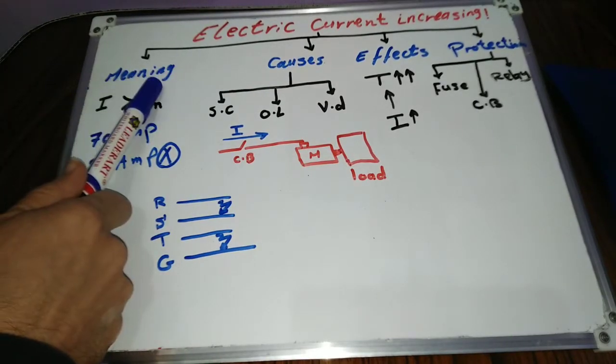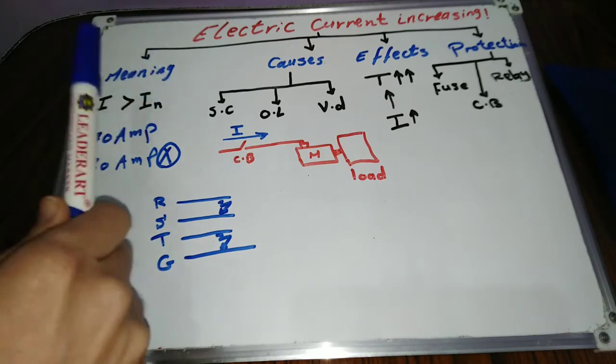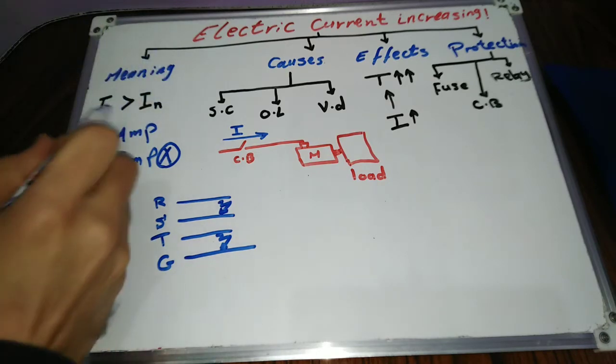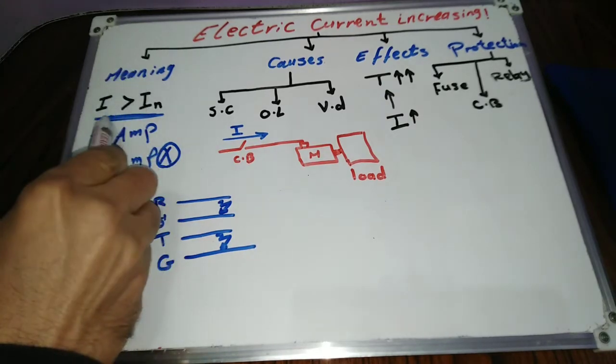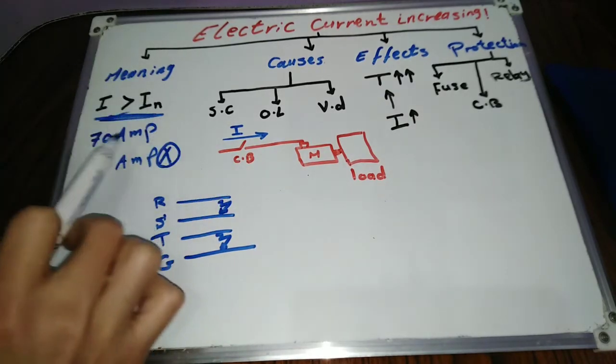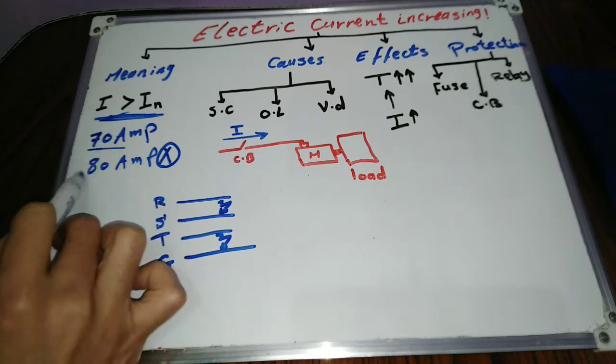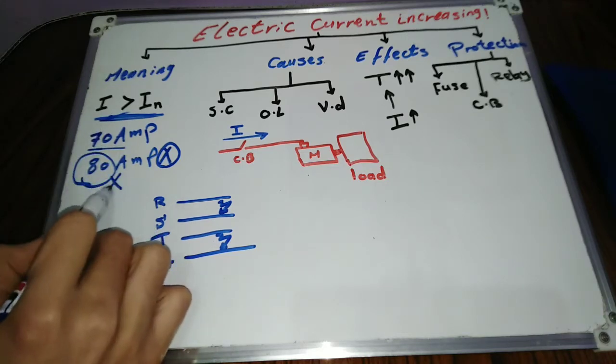Firstly, we should know what does electrical current increasing mean. Excessive amount of current beyond the design value of the electrical device or equipment is named overcurrent. For example, if a cable is designed to carry 70 amperes, then any value of current above this 70 amperes is overcurrent.